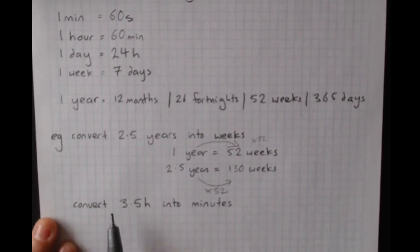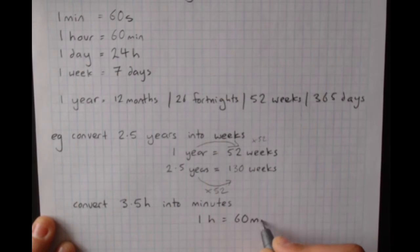So convert 3.5 hours into minutes. Hours and minutes, the relationship, one hour is 60 minutes. Underneath the same unit that I know, so I know I've got 3.5 hours, so I'm going to write this under the hours.